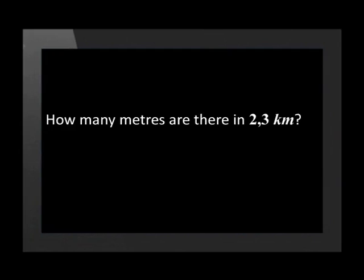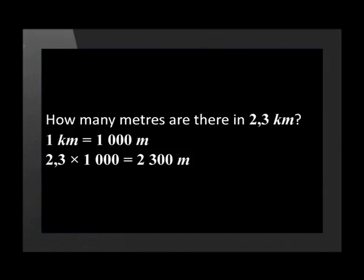Let's try a simple conversion calculation. How many meters are there in 2.3 kilometers? We know that a kilometer is equal to 1,000 meters. Therefore, we multiply 2.3 by 1,000, which equals 2,300 meters.